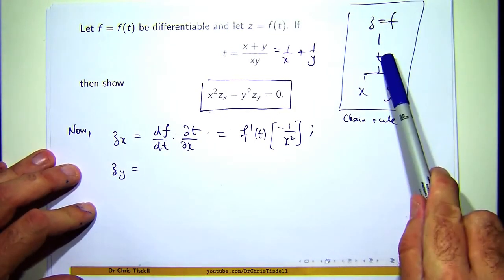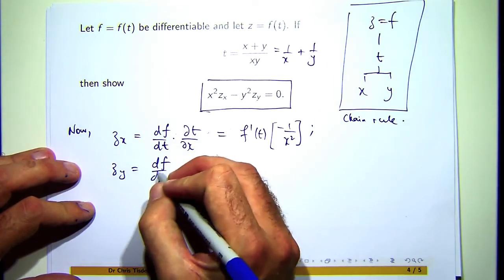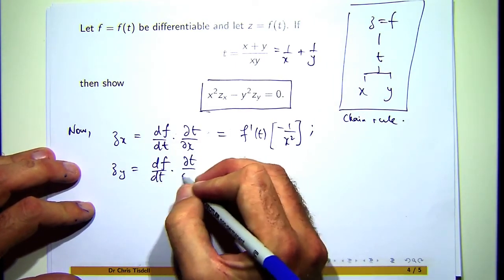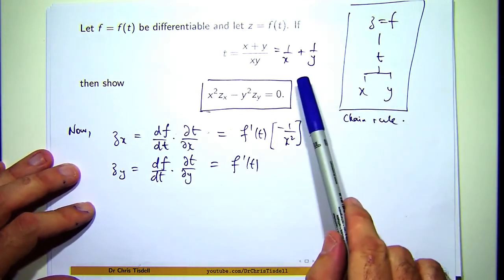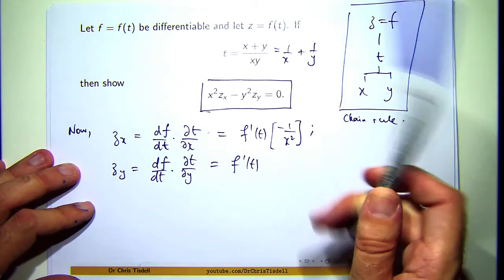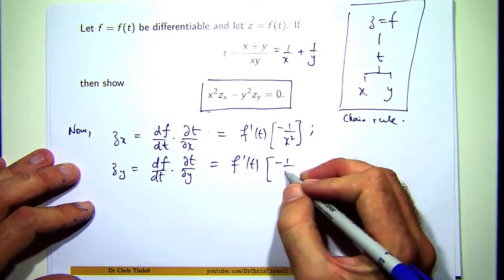z sub y: df/dt times dt/dy. You don't know what f is. Let's go up here, differentiate partially with respect to y. Well, that's going to be zero, that's going to be negative one on y squared.